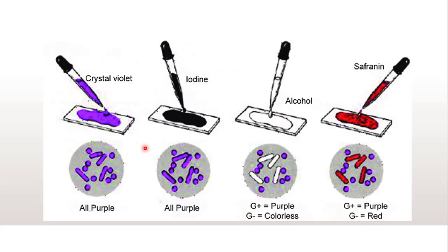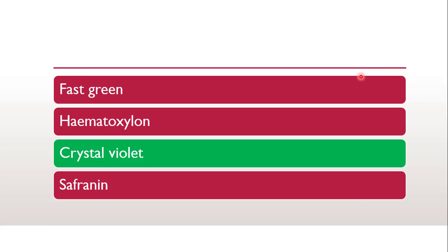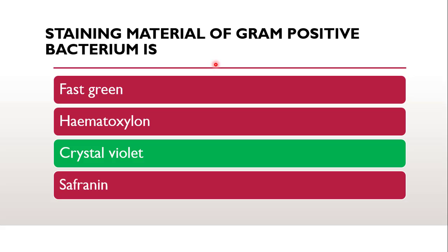Crystal violet is the primary stain which will stain all the bacteria purple in color. Then iodine is used for fixation of color. When the decolorizer — that is alcohol — comes into the picture, whatever gram positive bacteria are there, they will remain purple only. The gram negatives will get stained with the secondary stain called safranin. So the correct answer is crystal violet, which is the primary stain — even after the action of decolorizer, gram positive bacteria hold the color of crystal violet.